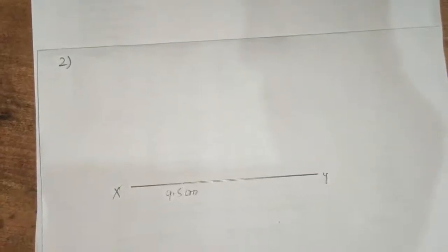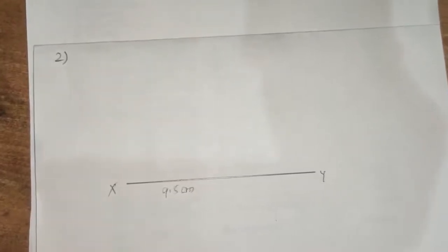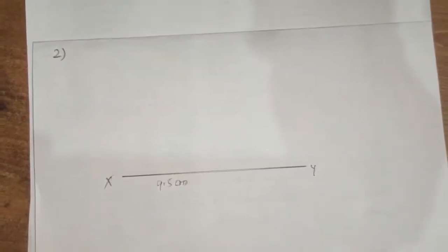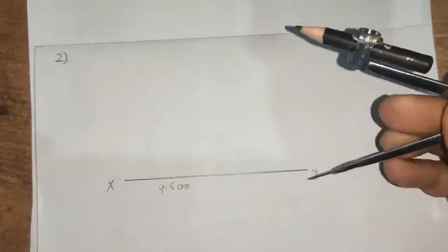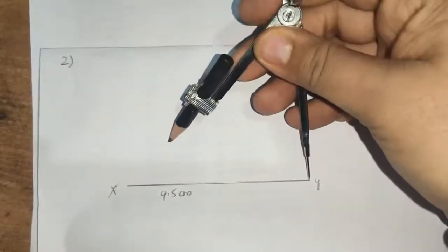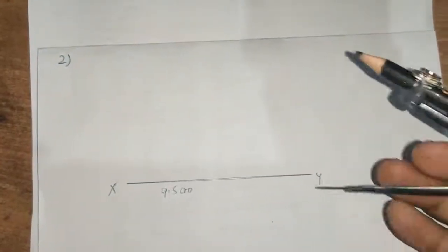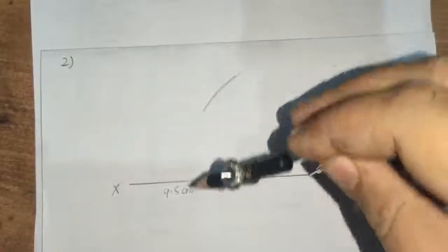After this, construct its perpendicular bisector. As in question number 1, we have drawn. Take distance in your compass more than half. This distance means more than half you will take. And then make arcs. One above the line, second below the line.